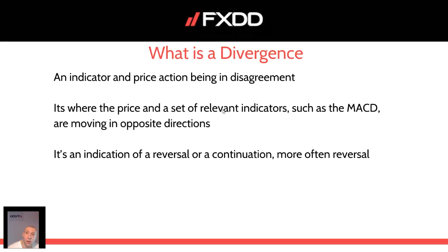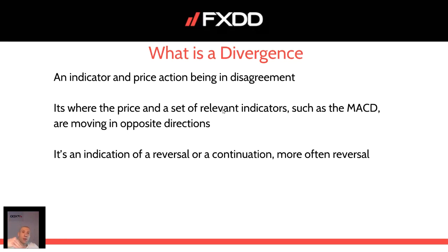Also have in mind that divergence is where the price and a set of relevant indicators — as I mentioned, MACD — are moving in opposite directions. It's easiest to follow: price goes up, the indicator goes down, or vice versa — price goes down, the indicator goes up. But there are five different types of divergence that I will explain during the webinar.